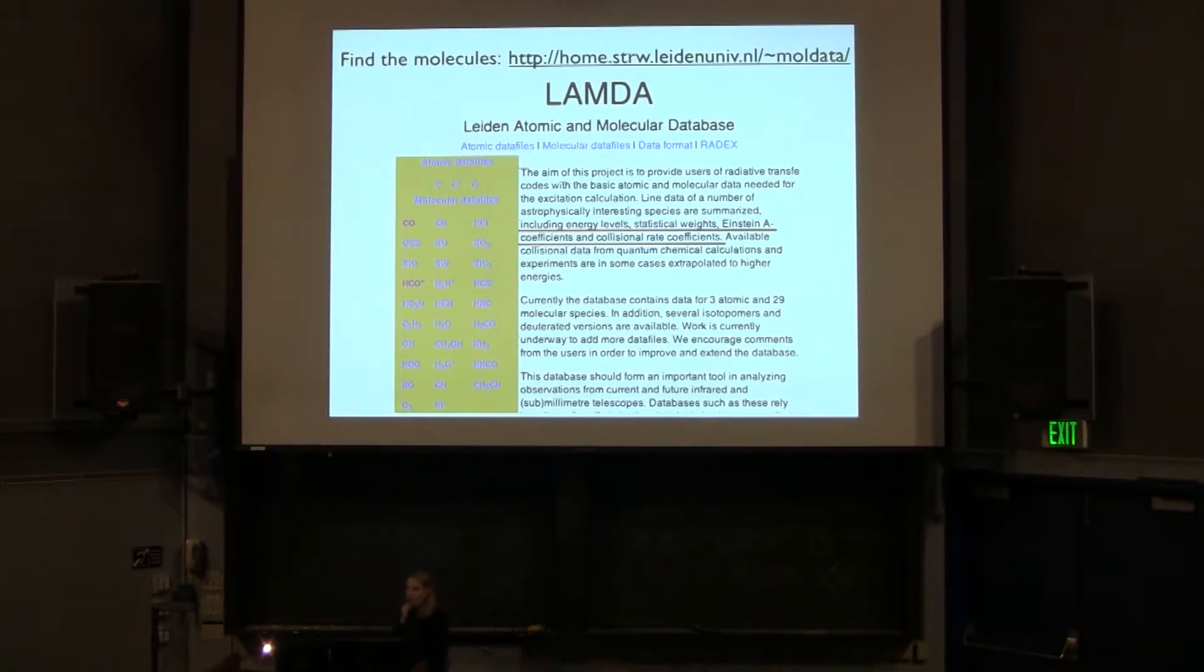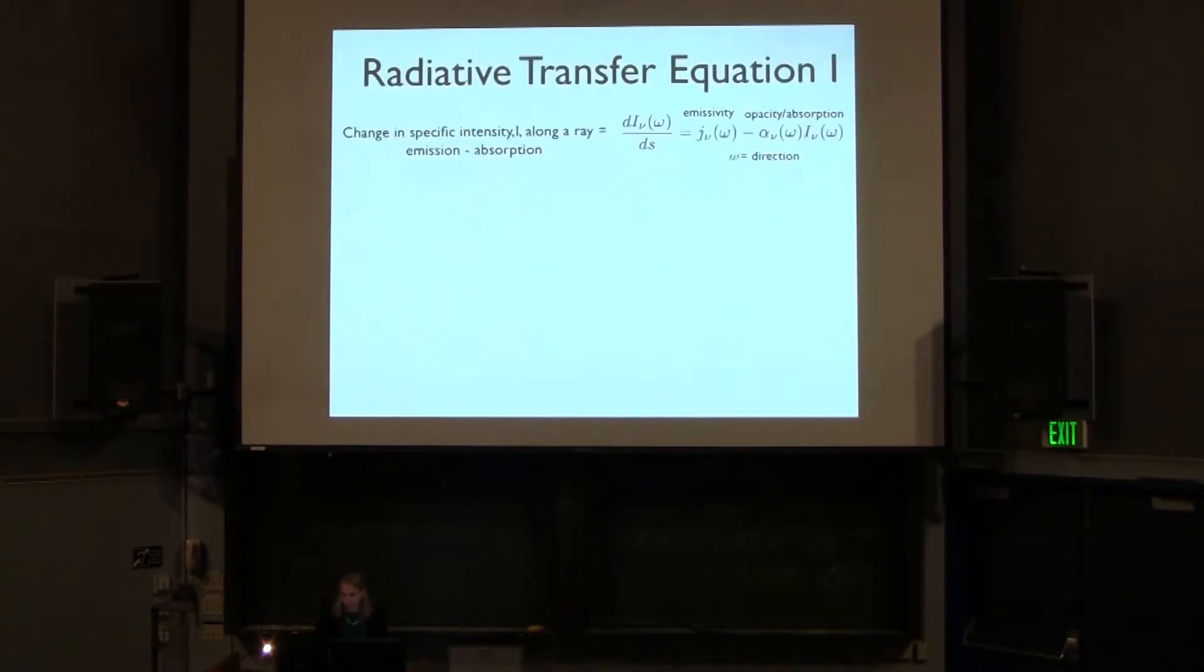So if you want to determine these fundamental properties for different molecules, there's a very handy astrophysical website called Lambda, which is the Leiden atomic and molecular database. They compiled a whole set of different useful molecular information, including these different energy levels, statistical weights, these Einstein A and B coefficients, and these collisional cross-sections. So this is probably the first place to start looking if you want to be modeling molecular lines.